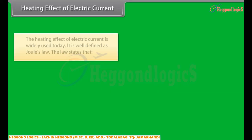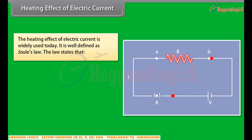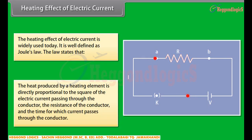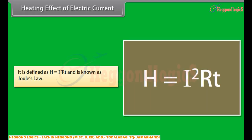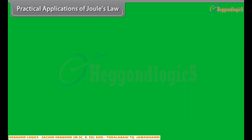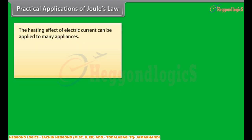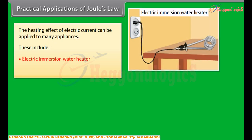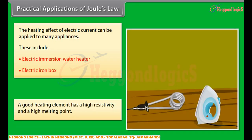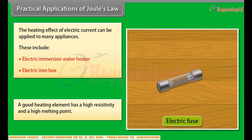The heating effect of electric current is widely used today. This effect is caused when electric current passes through a conductor, generating heat due to the resistance it offers to the current flow. The work done in overcoming this resistance produces heat. The heat produced is directly proportional to the square of the electric current, the resistance of the conductor, and the time for which current passes through the conductor. This is defined as H = I²RT and is known as Joule's Law. Practical applications include the electric immersion water heater and the electric iron box. A good heating element has high resistivity and a high melting point. An electric fuse is an example: a fuse rated 3A means the maximum current it can sustain is 3A.